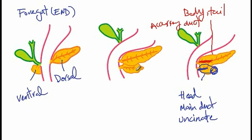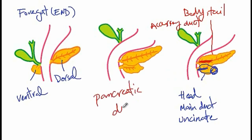There is a condition where the ventral bud may not fuse with the dorsal bud, and this is called pancreatic divisum. In this case, the head will empty into the main pancreatic duct, while the body and tail will empty into the accessory pancreatic duct.